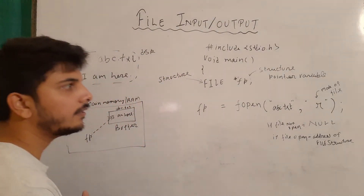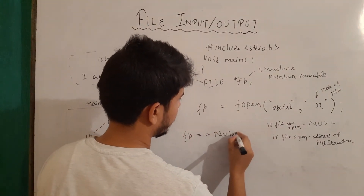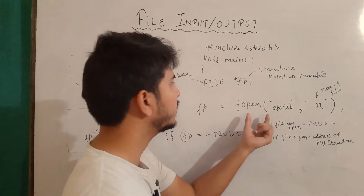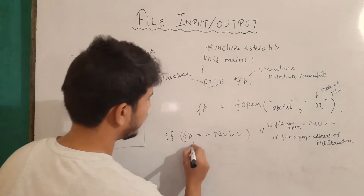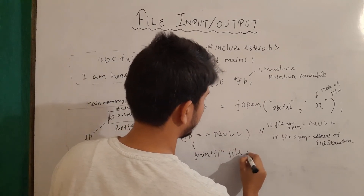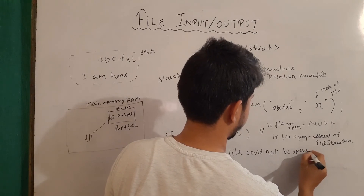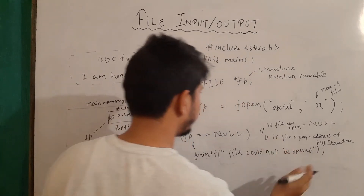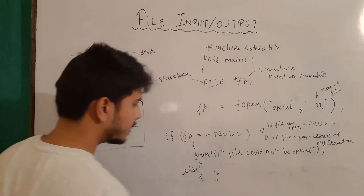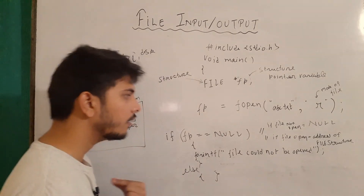Now let's say I want to check whether the file is even opened or not. So I will write if(fp == NULL). If fp equals NULL, that means the file is unable to open, and I should write printf("File could not be opened"). If this is not the case, then in the else part, we carry out the operation we want to perform — for example, reading the content or writing the content.